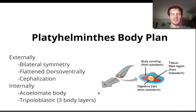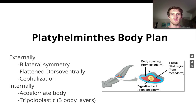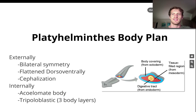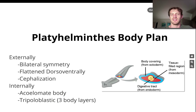Let's also take a look at what we find internally for these organisms. They're acoelomate, which means that they have no body cavity. As you look at this body, there's really no space — there's no air in it. It's thick the whole way through. There's no coelom. That's why it's called acoelomate.